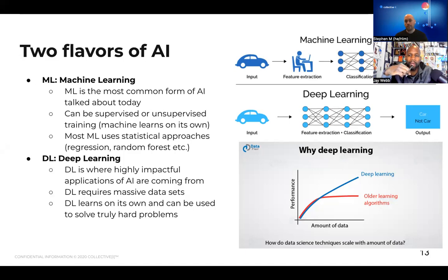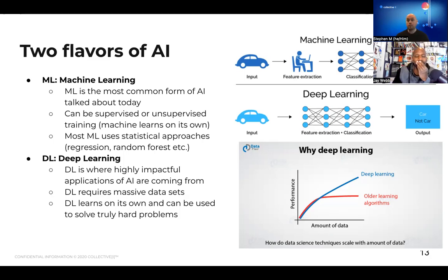There is an easy way to understand the core difference between machine learning and deep learning. In machine learning, you're going to have a data scientist doing something called feature extraction. In deep learning, there's no man in the middle. Machine learning is the most common form of AI because it's super cheap, and you use it when you have a small amount of data. Deep learning, on the other hand, is this thing people are excited about because the results are so dramatically better — it has exceeded what humans can do on their own. That's the jaw-dropping moment you had with ChatGPT.